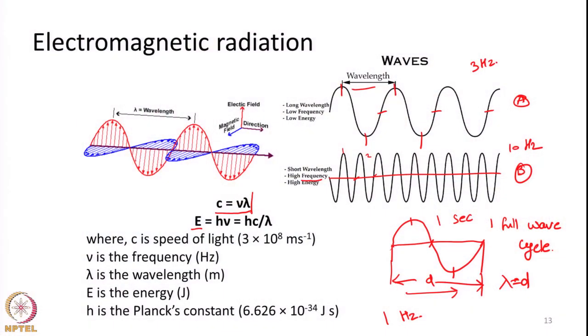What is the relationship between velocity, frequency, and wavelength? Velocity c equals frequency times lambda: c = νλ, or otherwise ν = c / λ. Essentially, wavelength and frequency are inversely related with each other. If the frequency is more, the wavelength will be less; if the wavelength is more, the frequency will be less.